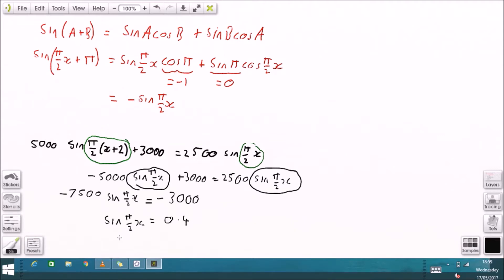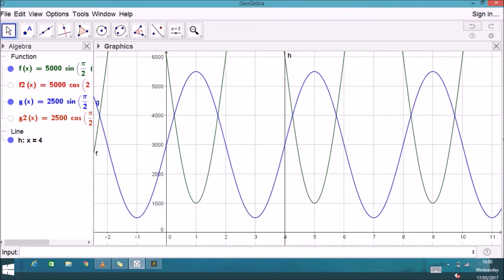So this step here: π over 2x equals the inverse sine of 0.4. Right, now we're going to want to try and find not just one solution but the first two solutions.